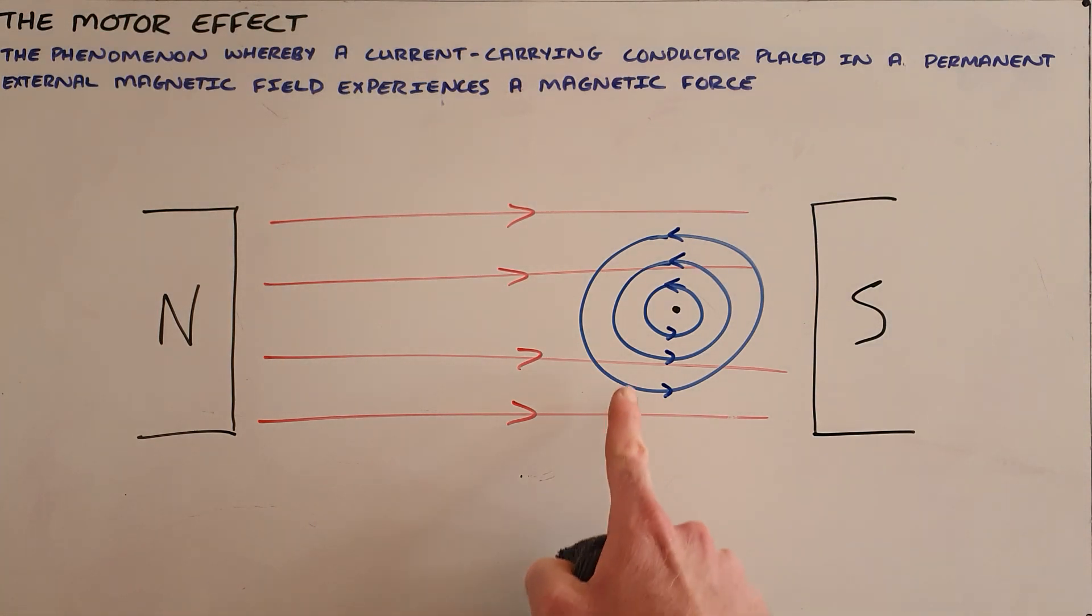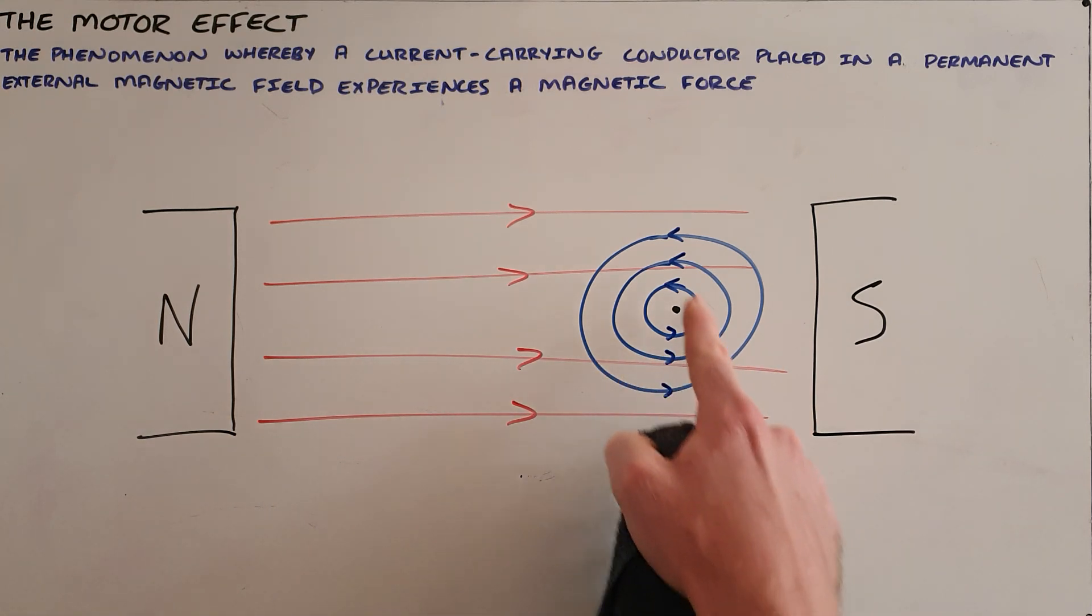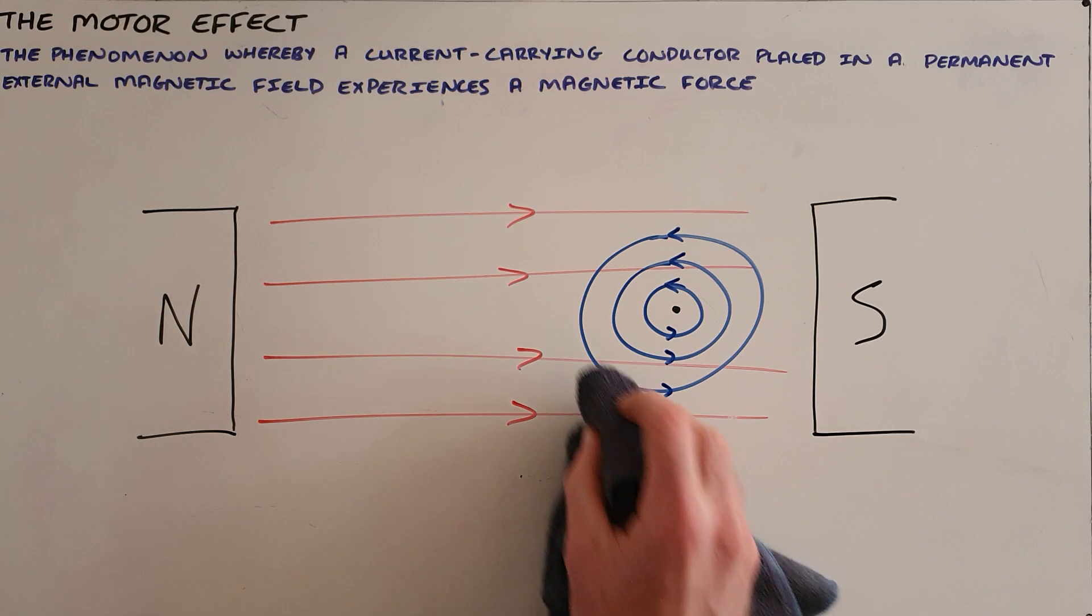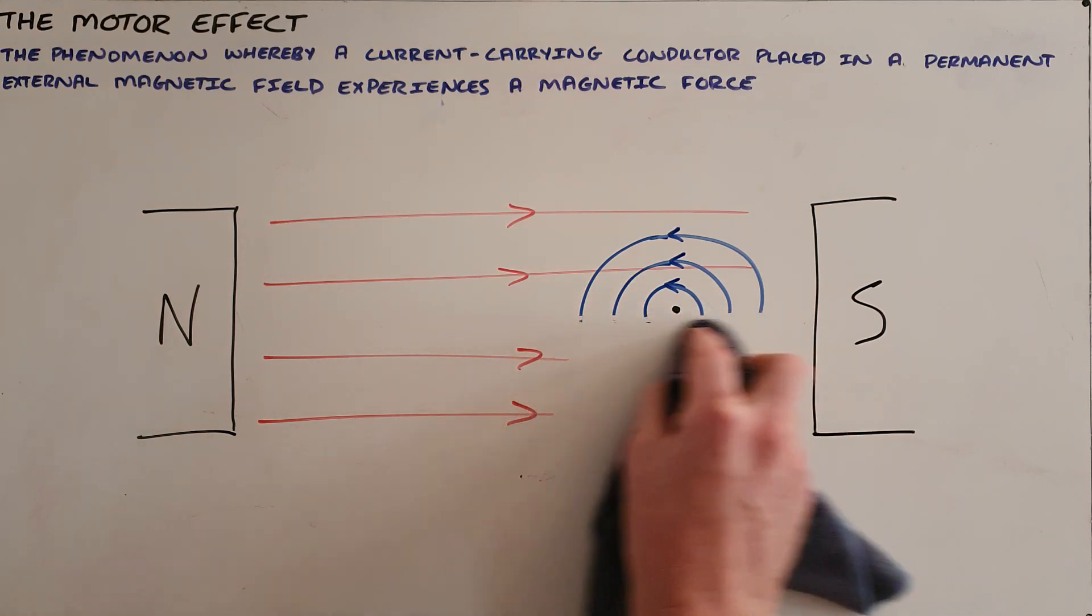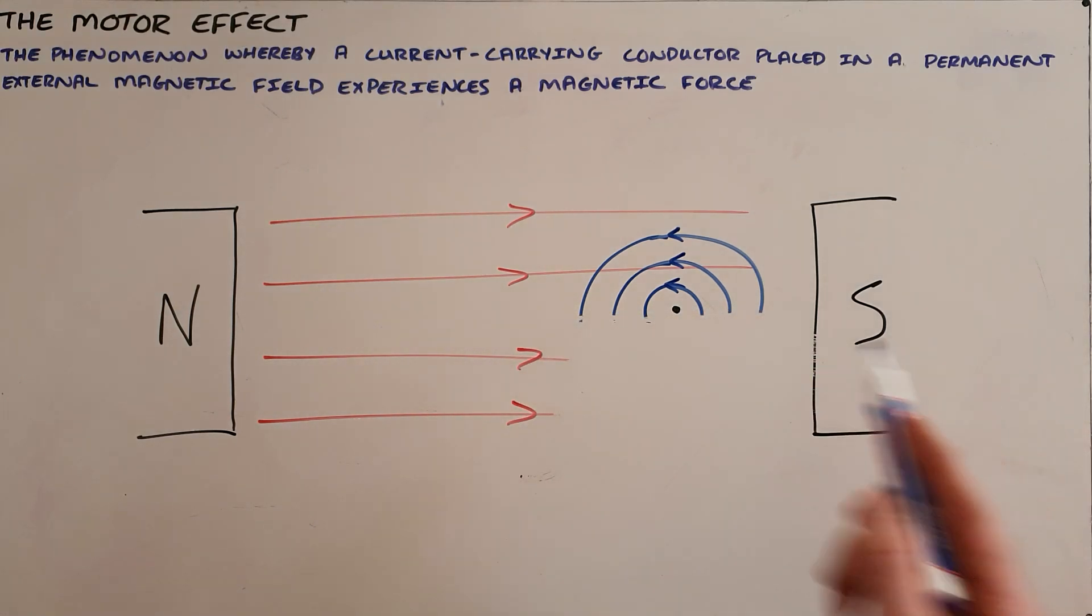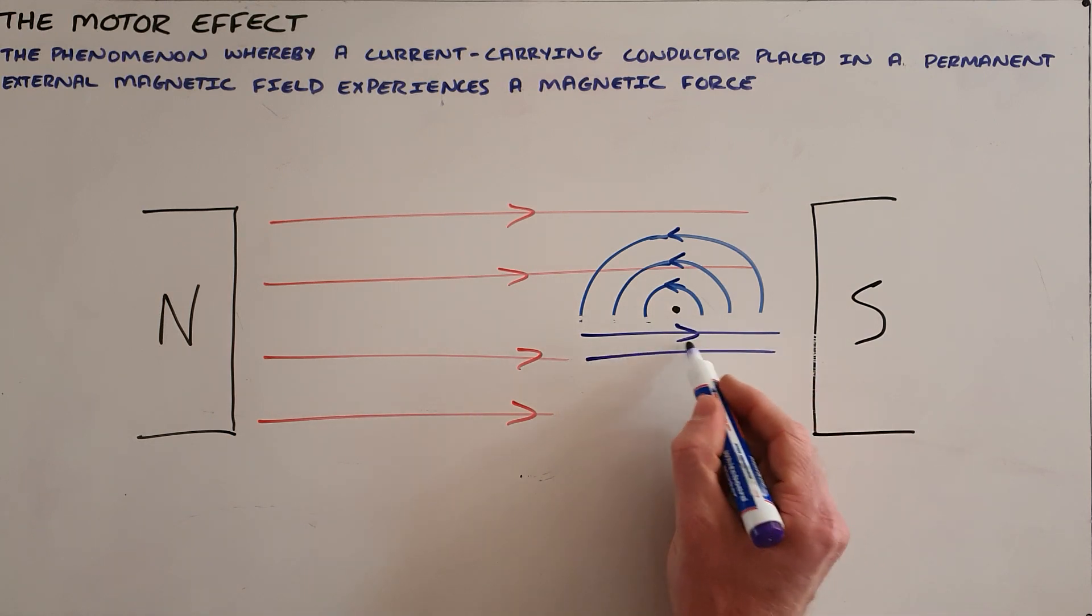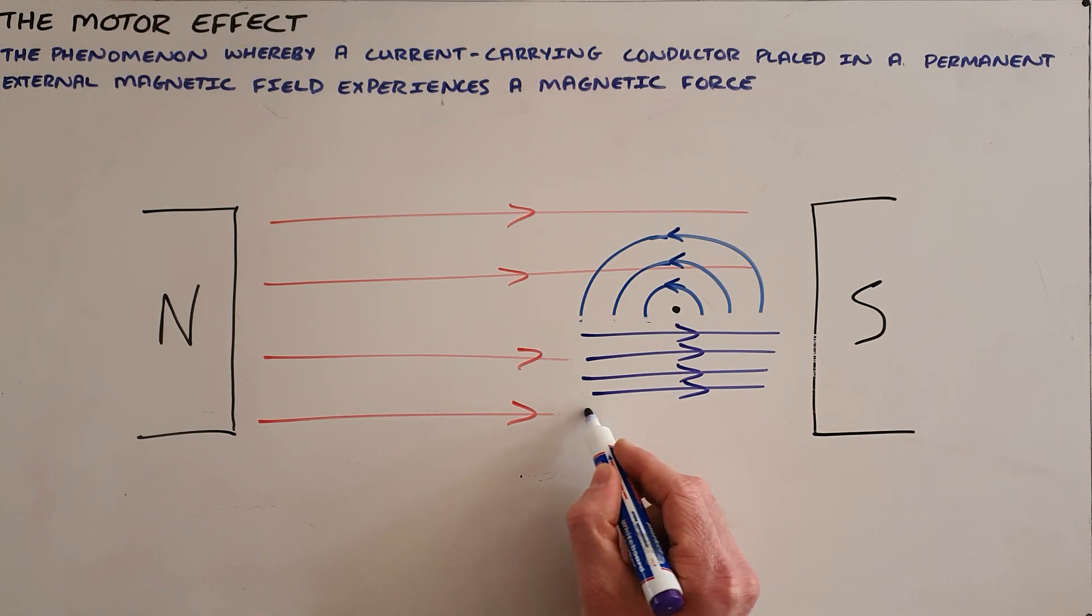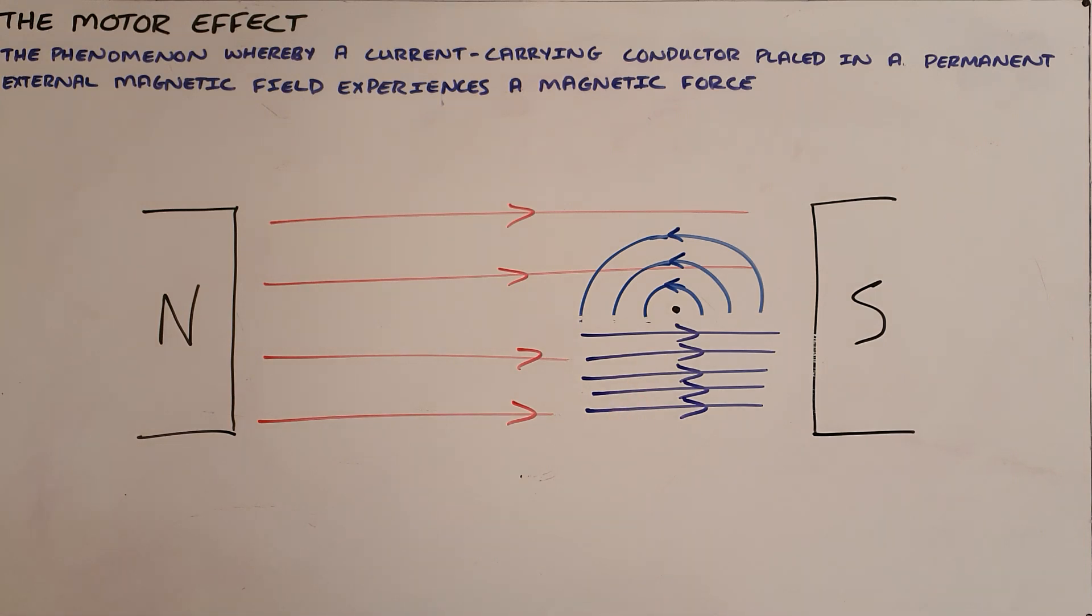Now, we can see that beneath this wire, the external magnetic field interferes constructively with the magnetic field surrounding the wire, which results in a stronger magnetic field below the wire because both magnetic fields acting in the same direction result in a stronger magnetic field.